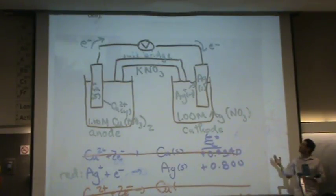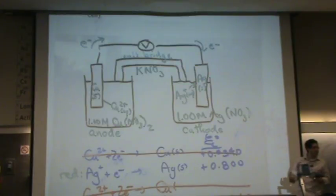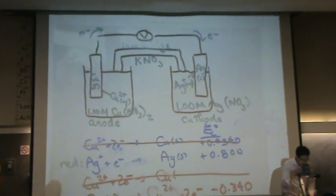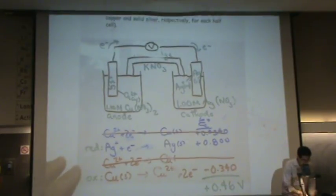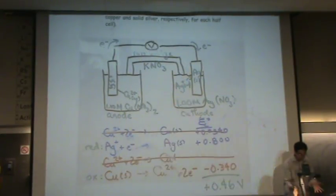Most of the time, I either see in the salt bridge potassium nitrate or potassium chloride are the most two common ones. So there we go. We've got voltage 0.46. That's what you read on your voltmeter. And there's your cell diagram. Any questions about this?